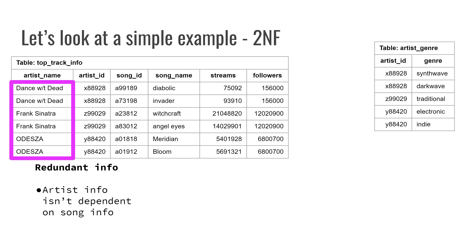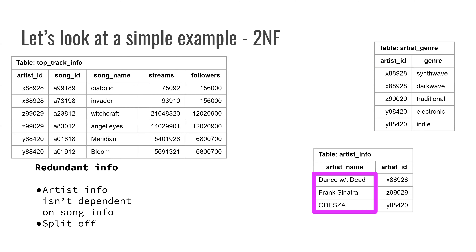Now let's look at the second normal form. We have redundant info — for example, artist name isn't necessarily dependent on the song information itself. Furthermore, we already have artist ID sitting here as a foreign key and also an identifying object. So instead of having this information in the main table, we could pop it out and make another artist info table. For one, we reduce a lot of string storage in the top track info table, because we're duplicating these long strings every single time. Spotify includes 10 tracks for each artist, so each artist name is duplicated 10 times. By cutting those down to a single one per artist name, you reduce a lot of information and storage space.